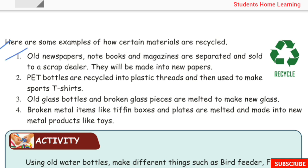Old newspapers and magazines are separated and sold to a scrap dealer — they will be made into new paper. PET bottles are recycled into plastic threads and used to make sports t-shirts. Old glass bottles and broken glass pieces are melted to make new things. Broken metal items like tiffin boxes and plates are melted and made into new metal products like toys.